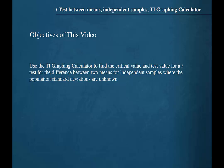The objective for this video is to learn to use the TI graphing calculator to find the critical value and test value for a t-test for the difference between two means for independent samples where the population standard deviations are unknown.